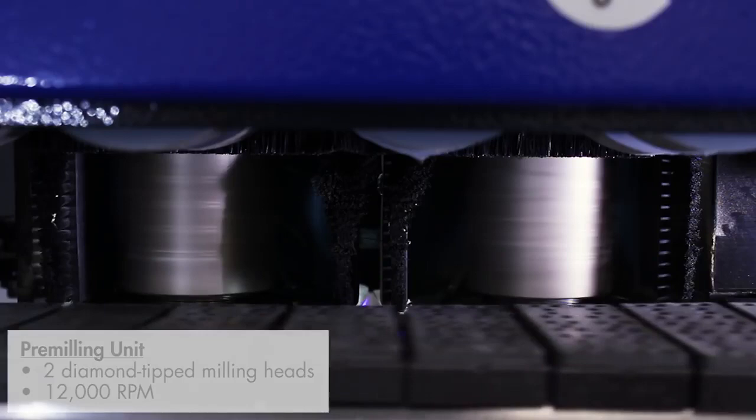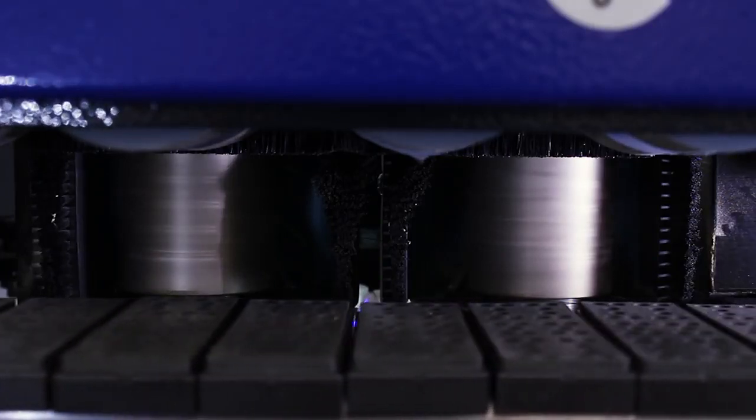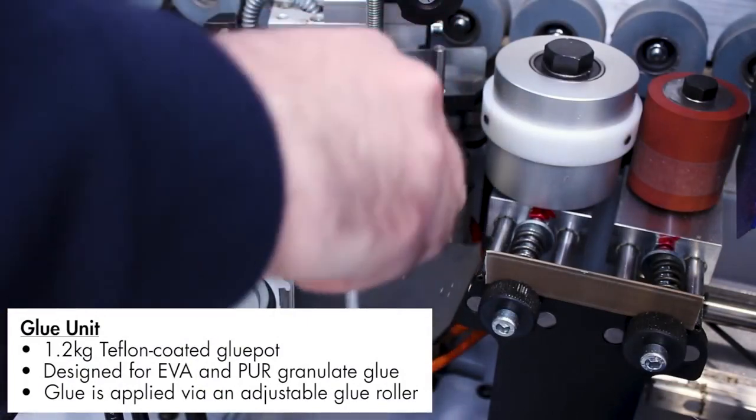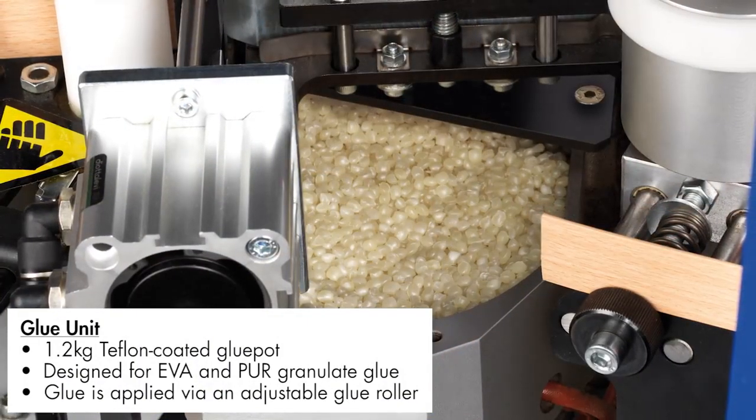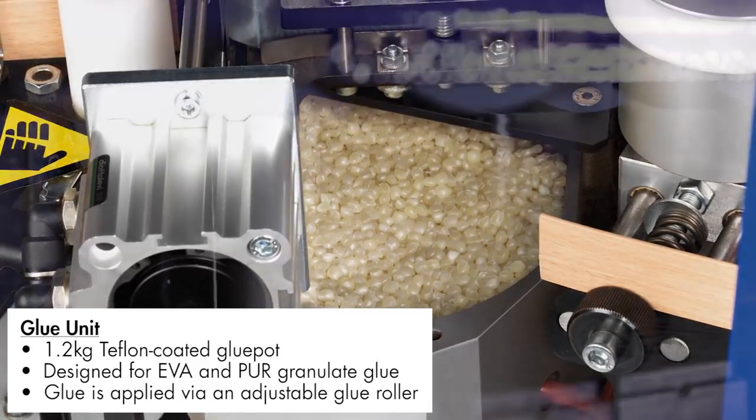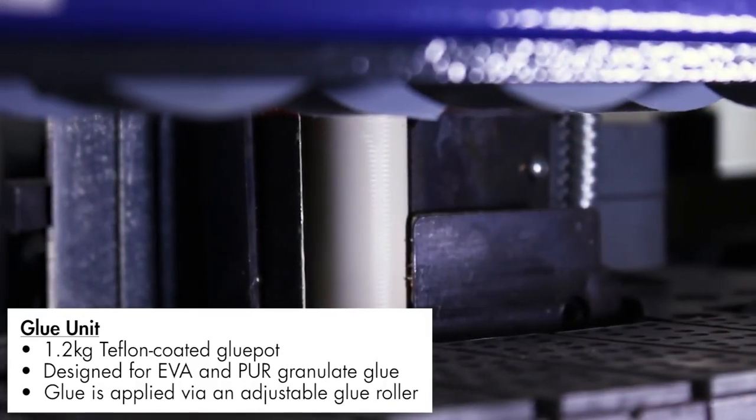The 1.2kg glue unit is designed for EVA and PUR granular glue, and is Teflon-coated to make cleaning the glue part easier. The glue is applied via an adjustable glue roller.